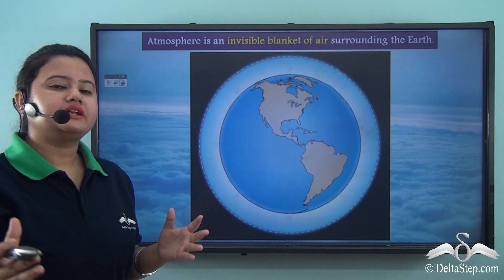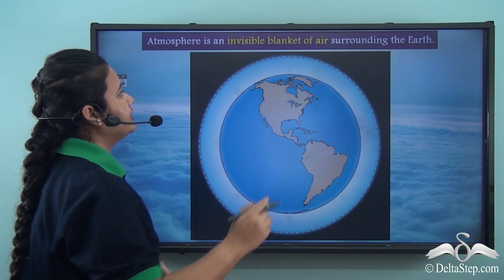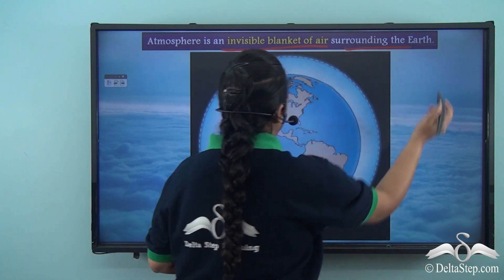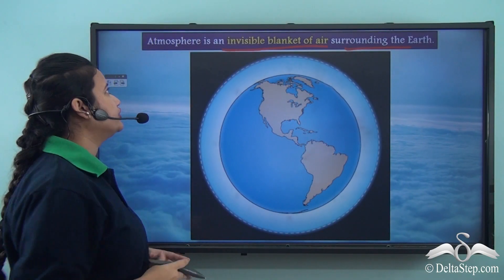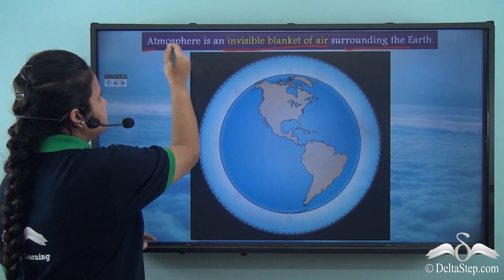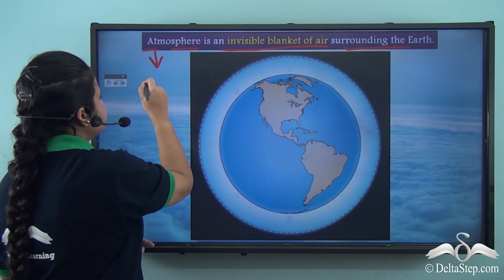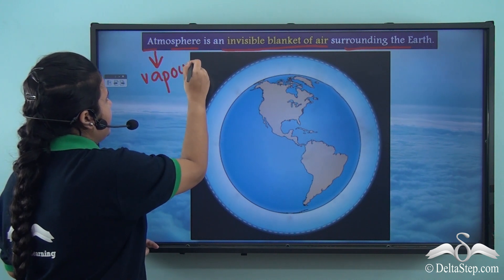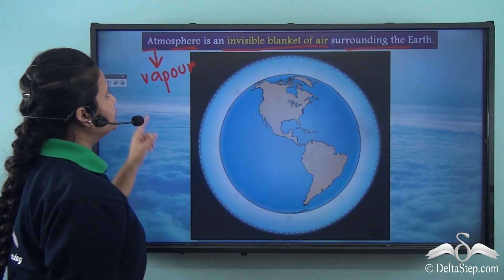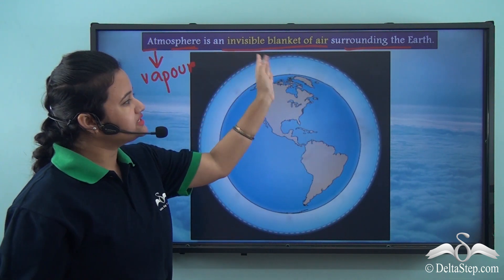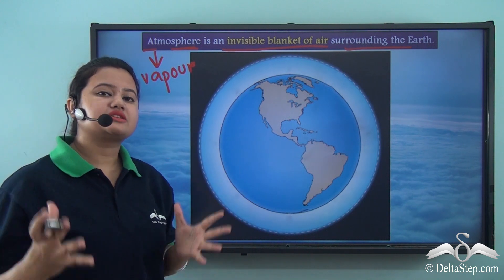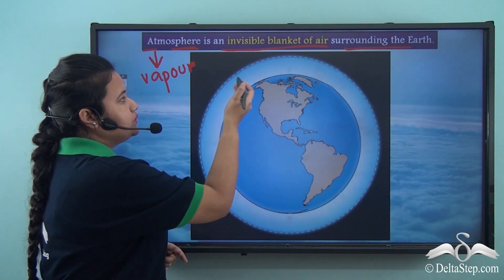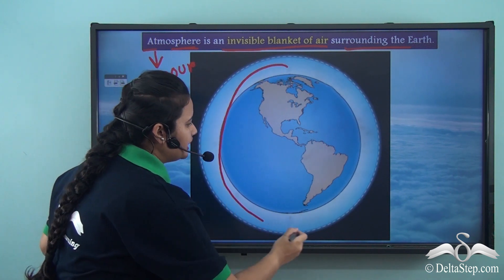Now let us know what atmosphere means. Atmosphere is an invisible blanket of air surrounding the Earth. The word atmosphere comes from two words: atmos and sphere. Atmos means vapour and sphere means ball. So atmosphere is an invisible blanket or sphere that is composed of vapour or air, and as we can see here, this invisible blanket surrounds our Earth.